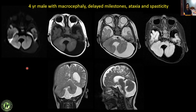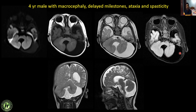Next: a 4-year male with macrocephaly, delayed milestones, ataxia, and spasticity. There is a retrocerebellar CSF signal intensity cystic lesion, hypointense on T1, hypointense on T2, completely suppressed on FLAIR, no restricted diffusion on DWI — consistent with CSF signal. There is aplasia or hypoplasia of the vermis, and the fourth ventricle is seen communicating directly with the cystic lesion. This is a classical case of Dandy-Walker malformation.